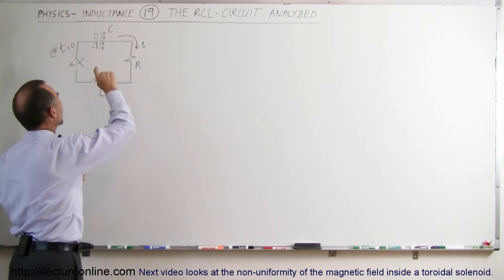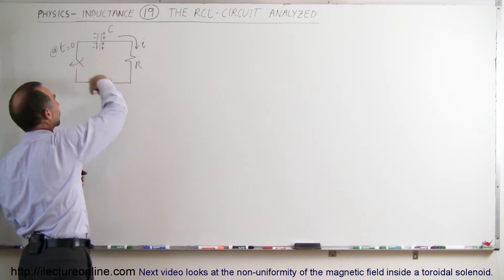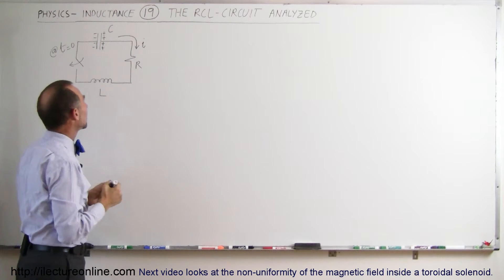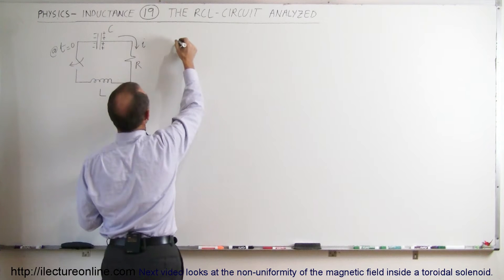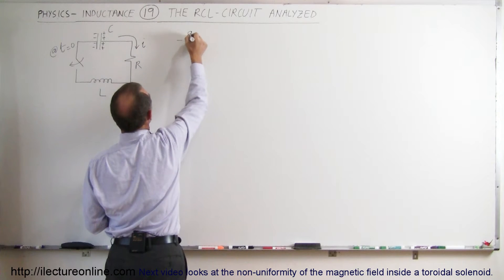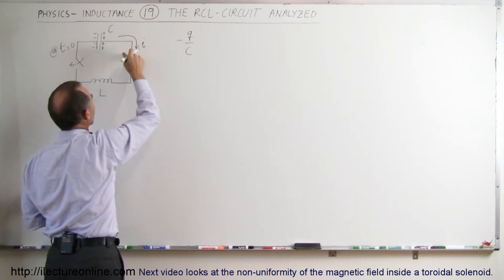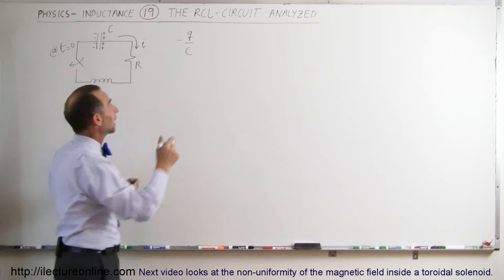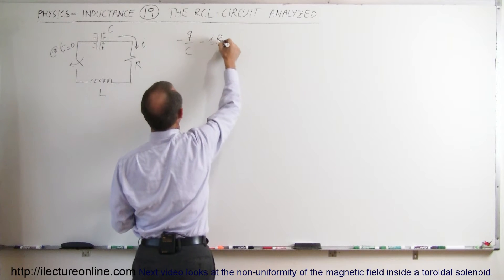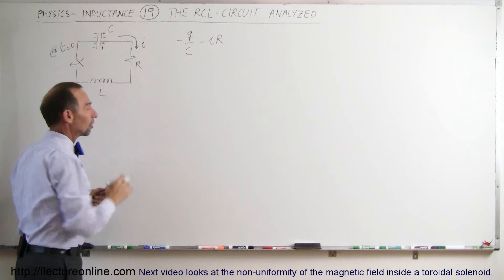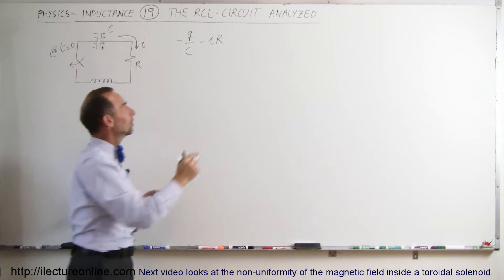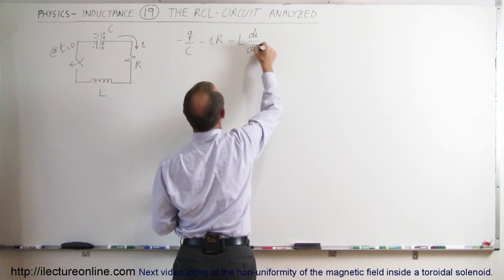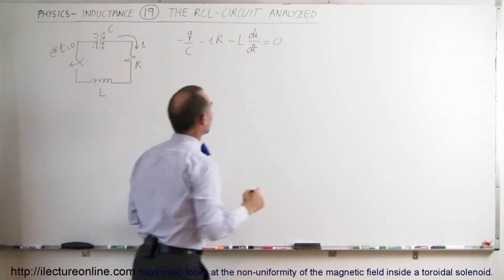So using Kirchhoff's rules, we're going to go around the circuit in a clockwise direction, same direction as the current. So first we will cross the capacitor, and the voltage across the capacitor is minus the charge divided by the capacitance. Then we come around to the resistor. The voltage drop across the resistor is minus IR, minus the current times the resistance. And finally, across the inductor, the voltage drop across the inductor is going to be minus the inductance times the change in the current with respect to time. When we add it all up, this should add up to zero.